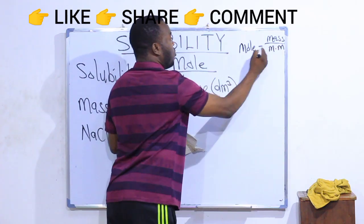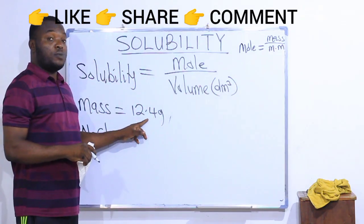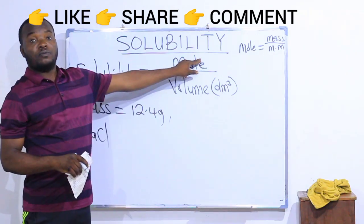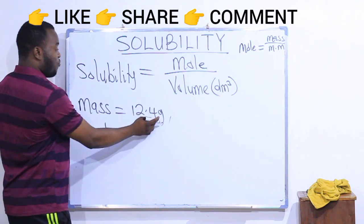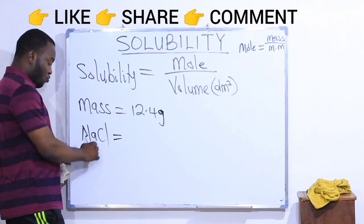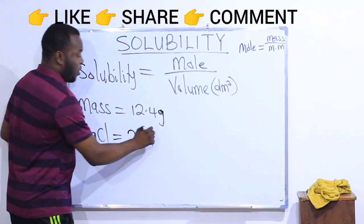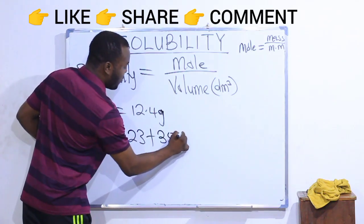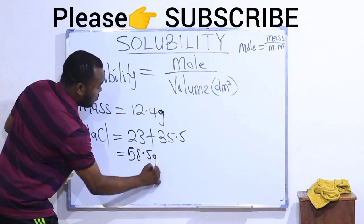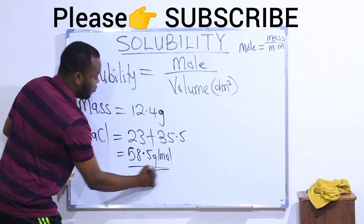Mole is mass divided by molar mass. So I am going to divide the given mass by the molar mass of sodium chloride to get the number of moles. The mass is 12.4 grams, and the molar mass of sodium chloride — sodium is approximately 23 and chlorine is approximately 35.5 — giving 58.5 grams per mole.